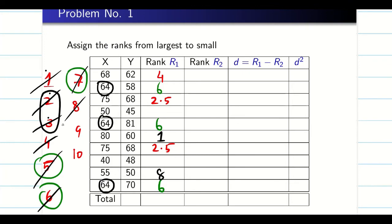The next highest value gets rank 8, then rank 9, then rank 10. In this manner we allocate all ranks: check how many times a value is repeated, take the corresponding ranks, average them, allot that average rank to each repeated value, then move on to the next available rank.